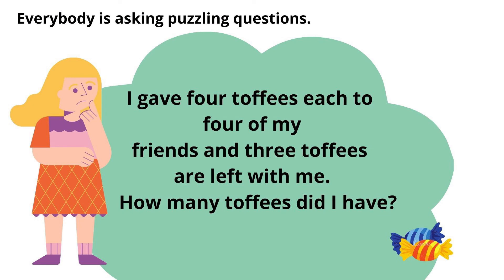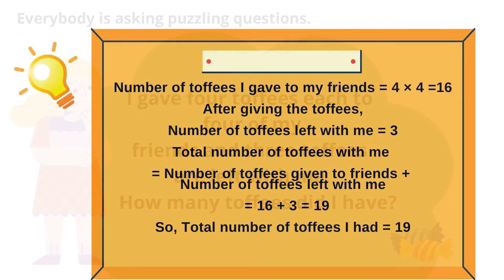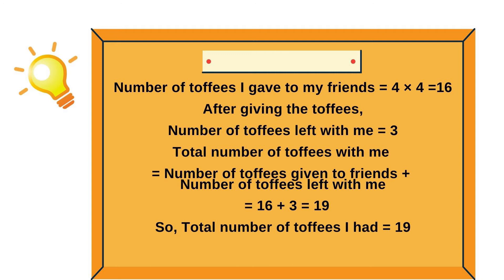Everybody is asking puzzling questions. How many toffees? I gave 4 toffees each to 4 of my friends and 3 toffees are left with me. How many toffees did I have? Number of toffees given to friends: 4 × 4 = 16. After giving the toffees, 3 are left. Total toffees: 16 plus 3 equals 19. So, the total number of toffees I had is 19.